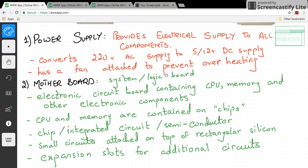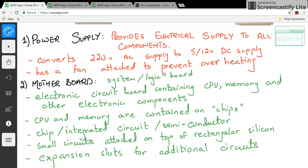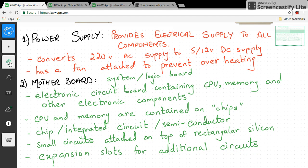The first component is the power supply. Power supply provides electrical supply to all components. It converts 220 volts AC supply into 5 to 12 volts DC supply. Because the power supply generates so much electricity and heat, it needs a fan to prevent overheating, which is attached to it.